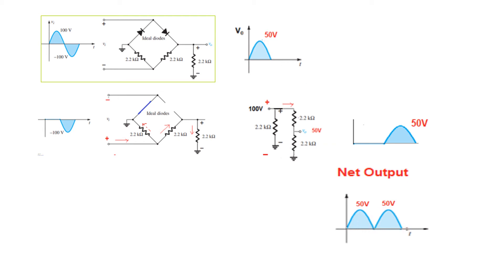The net output combining both halves gives us a full wave rectifier signal. We use the full wave rectifier formula: V_DC = 0.637 × V_max. So V_DC = 0.637 × 50 = 31.8 volts.